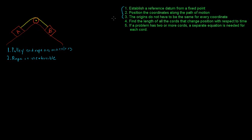Let's look at this pulley problem and use these rules to relate the motion of A to the motion of B. We establish a reference datum from a fixed point — we take the pulley right here, which is fixed on this incline, so this is our fixed point. The coordinates we come up with have to be along the path of motion. We know A is going to move in this direction and B is going to move in this direction, so the datum for A is going to look like this, and the datum for B is going to look like this.